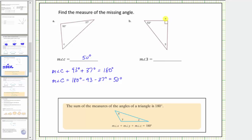Notice the next triangle is a right triangle. This square indicates this angle measures 90 degrees. And therefore the measure of angle three plus 53 degrees plus 90 degrees must equal 180 degrees.